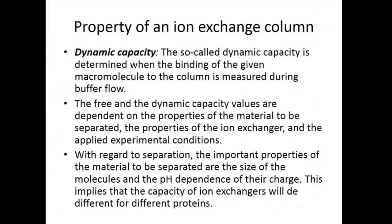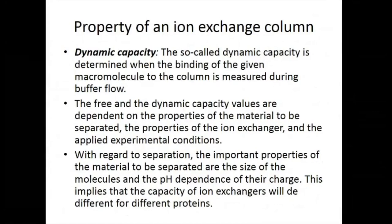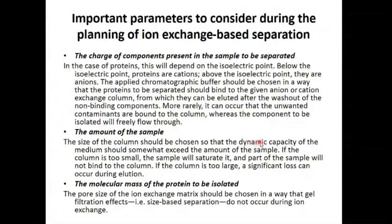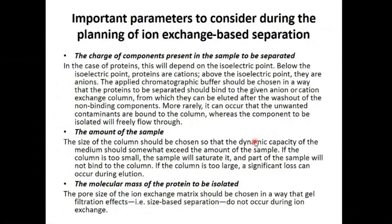The size of the column should be chosen so that the dynamic capacity of the medium or stationary phase somewhat exceeds the amount of the sample - the sample quantity should be less than the dynamic capacity. If the column is too small, the sample will saturate it and part of the sample will not bind to the column. If the column is too large, significant loss can occur during elution, as the quantity of sample will remain in the column and not come out.